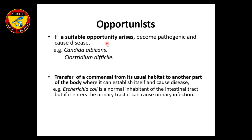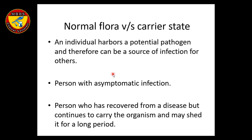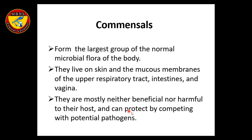Opportunists become pathogens when the opportunity arises — for example, Candida, a fungus, and Clostridium difficile. Or if a commensal or normal flora leaves its usual habitat and enters another part of the body, it can cause disease — for example, E. coli is a normal inhabitant of the intestinal tract, but when it enters the urinary tract it can cause a urinary tract infection. Commensals are the largest group of normal microbial flora; they are neither beneficial nor harmful, but they can protect by competing with potential pathogens.